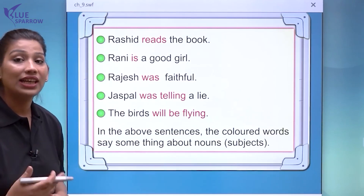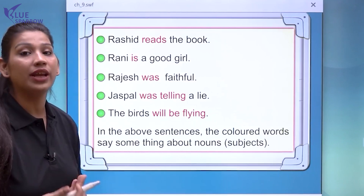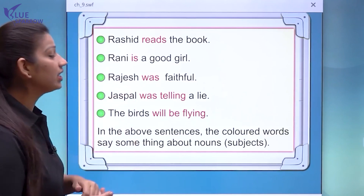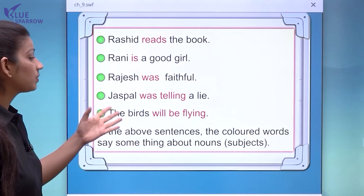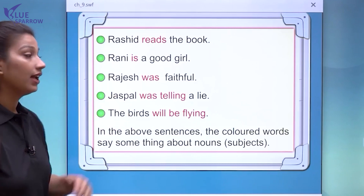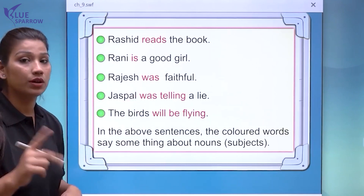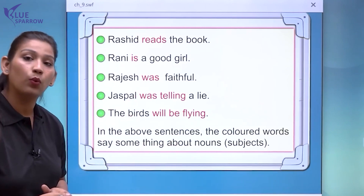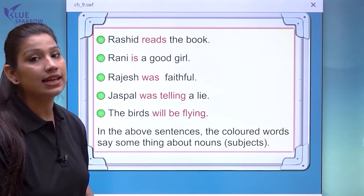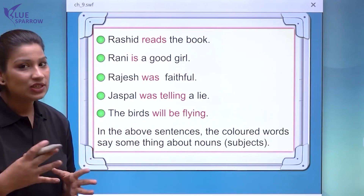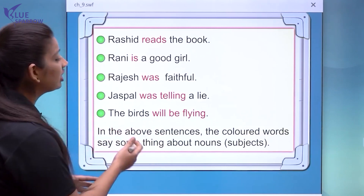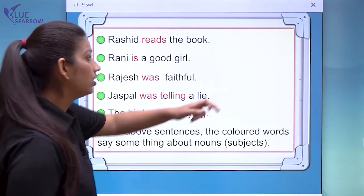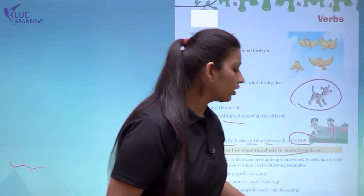'Rani is a good girl' — what kind of girl Rani is, is defined by the verb 'is.' 'Rajesh was faithful' — the verb is 'was.' 'Jaspal was telling a lie' — here students, you can see two verbs: 'telling' is also a verb, and 'was' is also a verb. 'The birds will be flying' — 'will be flying,' all of them together form the verb.